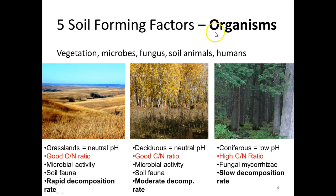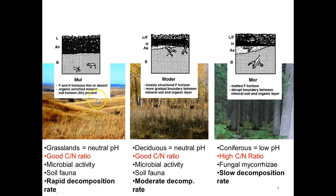Those five soil forming factors include organisms, which play a very big role in creating these humus forms. In a grassland environment, the C:N ratio tends to be fairly good, conducive to microbial activity. Similarly in a deciduous stand. However, in a coniferous stand, you have a very high C:N ratio — coniferous needles are not desirable for bacterial activity, so fungi are the primary decomposers. Fungi decompose much more slowly, whereas decomposition is much faster in grassland and deciduous environments.